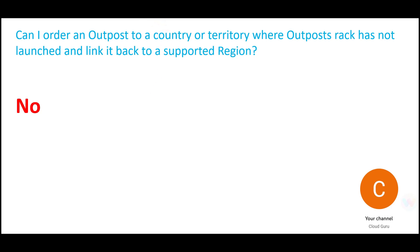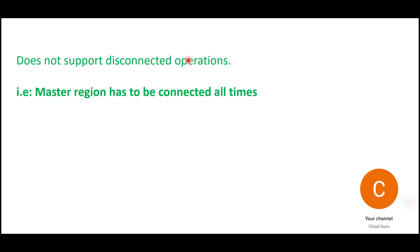Does Outpost support disconnected operations? No. The master AWS region has to be connected at all times. Even though the hardware is in your premises and your local network is working, there must be a connection between Outpost and your master AWS region. This is very important from a certification standpoint.